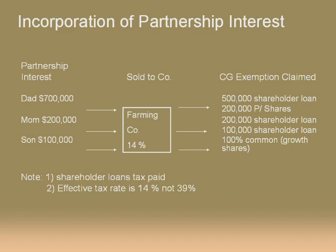Secondly, the common shares then go to the second generation, which increases in value as you pay off the shareholder's loan. My objective with these companies and partnerships is to land up where the second generation will own the operating company well before the transfer of land takes place — the actual transfer of the operating company will happen a lot sooner.